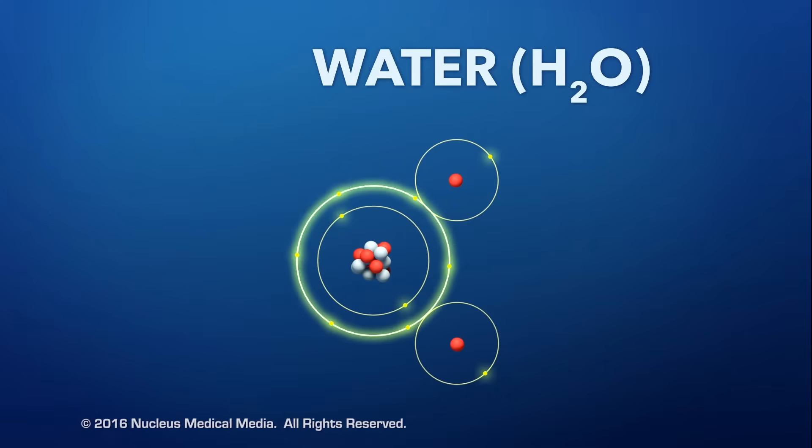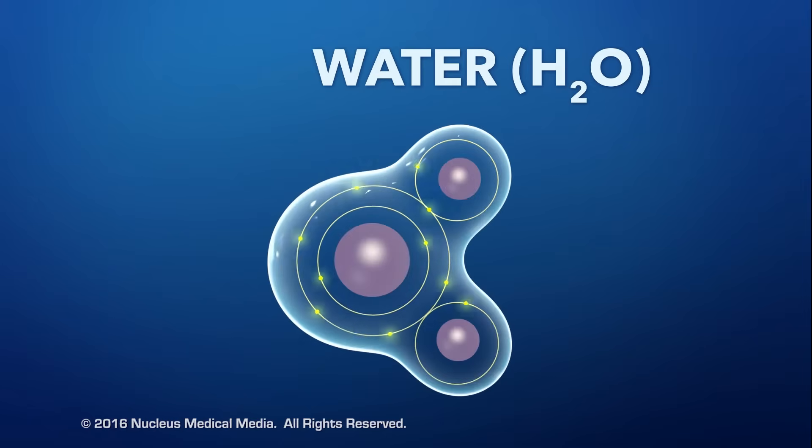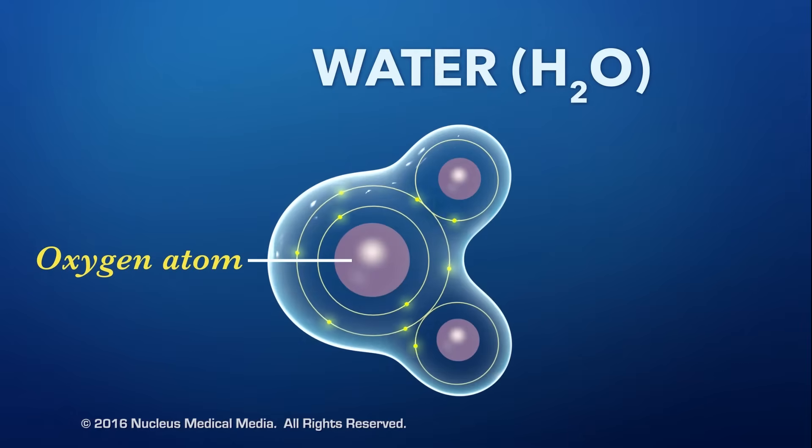This completes both oxygen's outer electron shell, which can hold eight electrons, and hydrogen's outer shell, which can hold two. However, the electrons aren't shared equally between the atoms because the oxygen atom attracts the electrons more strongly than hydrogen.